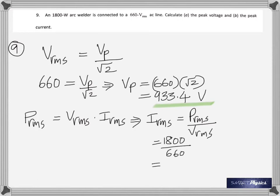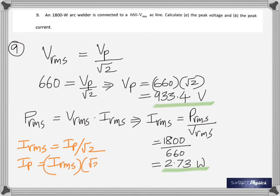1800, see, so what's given is always the RMS power, 1800 watts, right? And then you can find the RMS current by using peak current divided by root 2. That was 2.73 amperes, and this is now 2.73 times square root 2, 3.86 amperes.